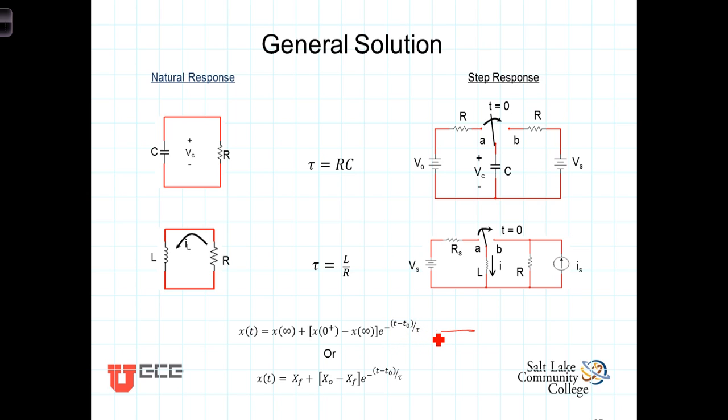This formula accounts for the possibility of the switching event happening at t equals t0 rather than t equals 0.